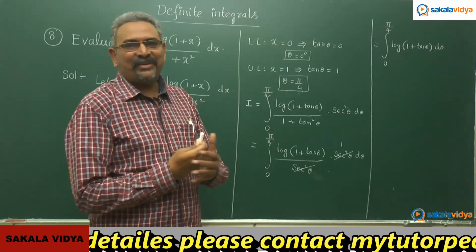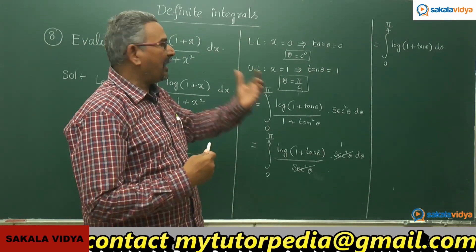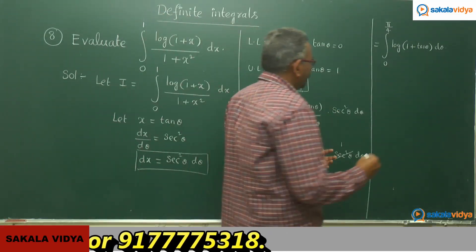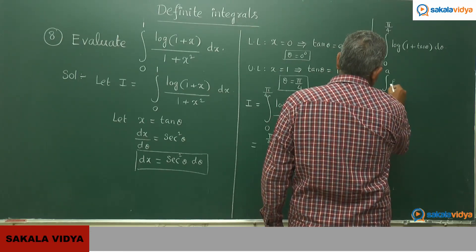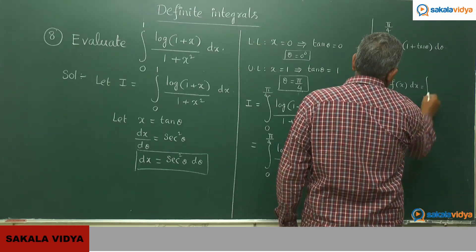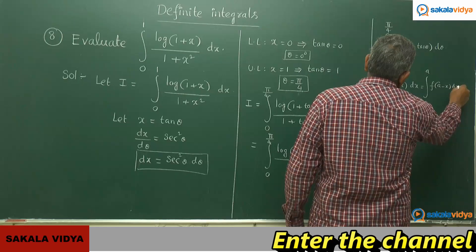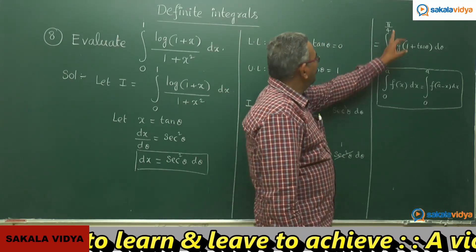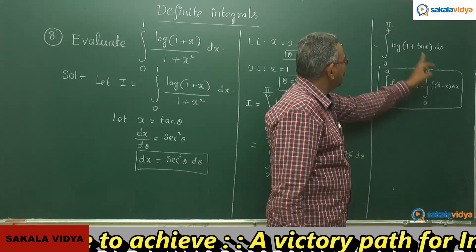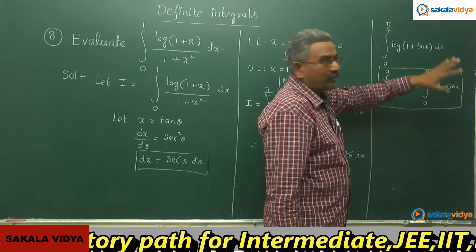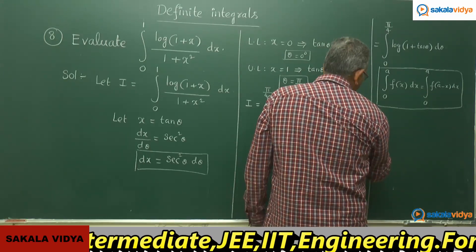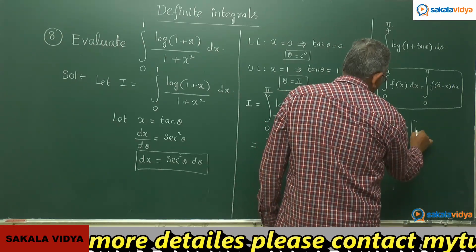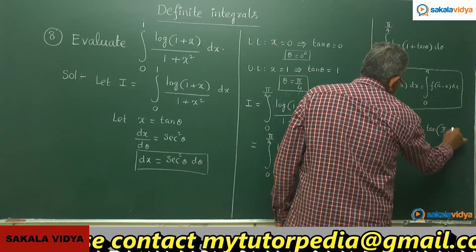You might recollect this — we have already done this problem. Let us solve it once again using the formula: integral 0 to a of f(x) dx = integral 0 to a of f(a − x) dx. Here a = π/4, so θ is replaced by π/4 − θ. Therefore I = integral 0 to π/4 of log(1 + tan(π/4 − θ)) dθ.